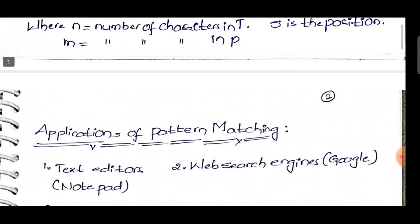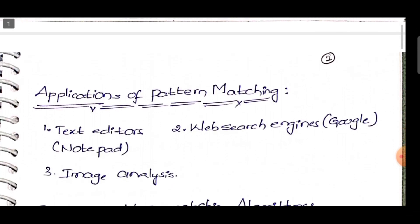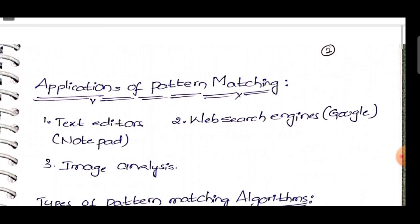The applications of pattern matching: there are mainly three applications. First, we use pattern matching algorithms in text editors. Second, we use pattern matching algorithms in web search engines. Third, we can use pattern matching algorithms in image analysis. A real-time example: if you use Google Chrome and type a single word, it will show similar words — that uses pattern matching.